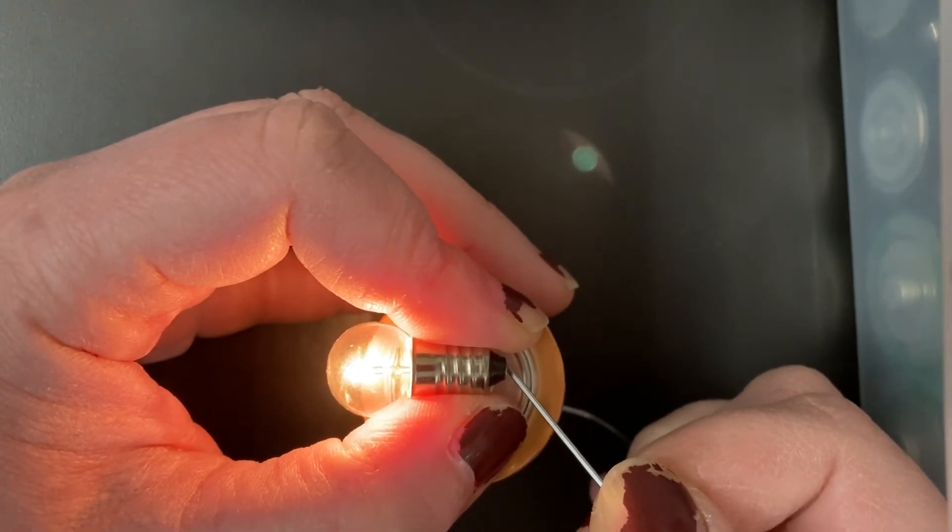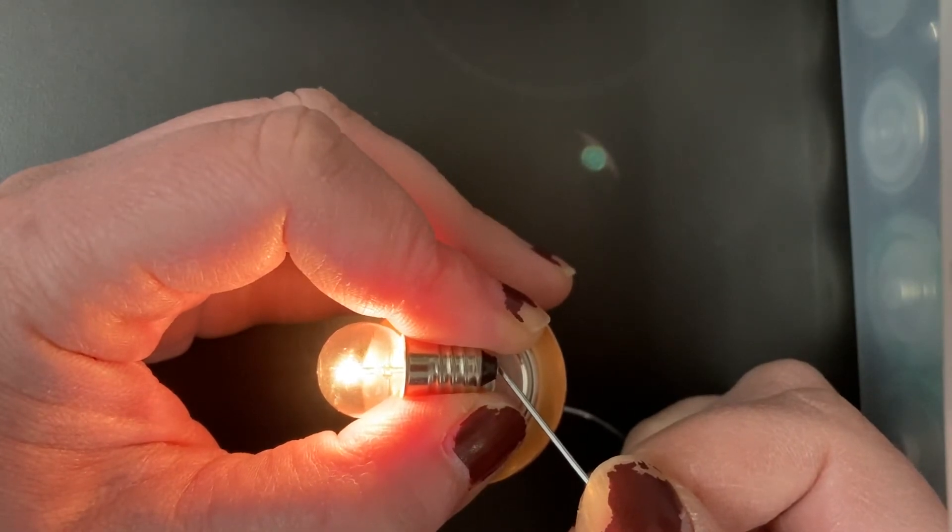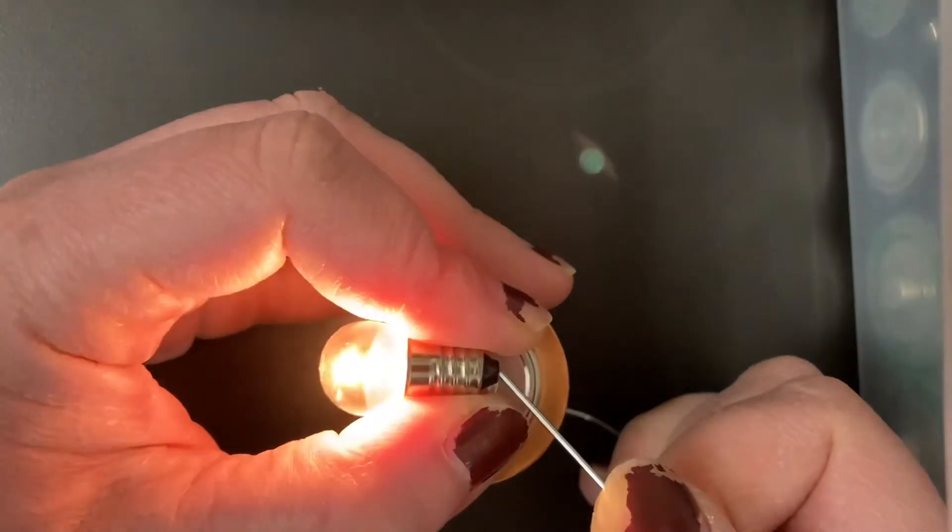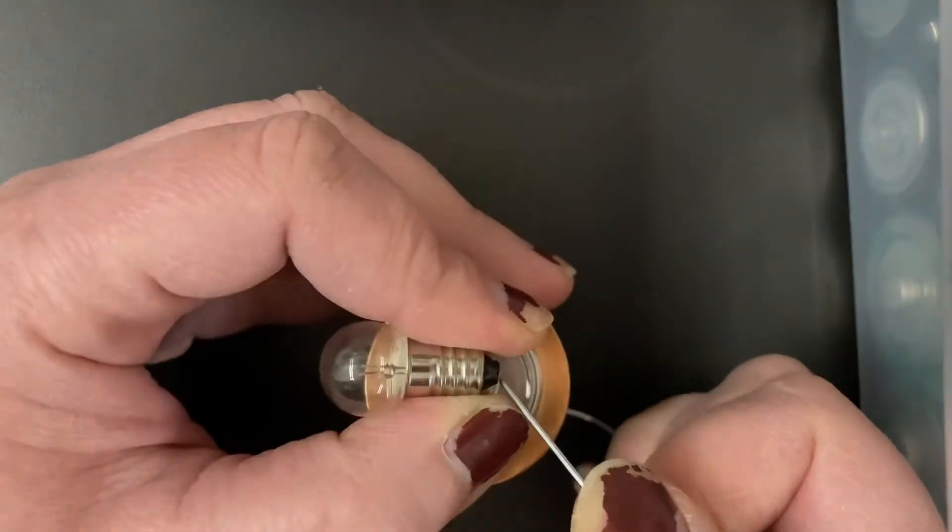Now, what's the science behind this? Well, there are electrons within the battery because it has potential electrical energy and those electrons are going to flow through the paper clip.